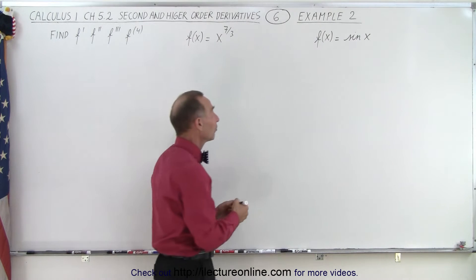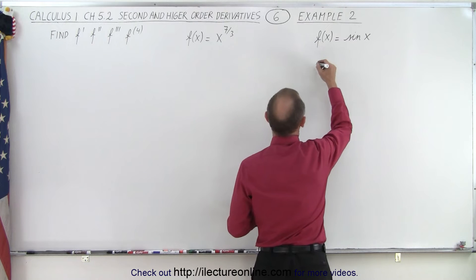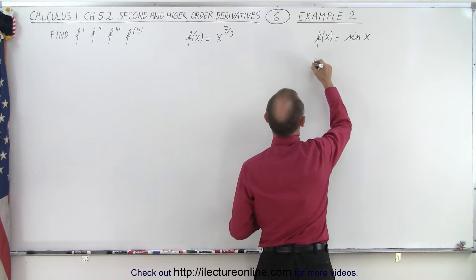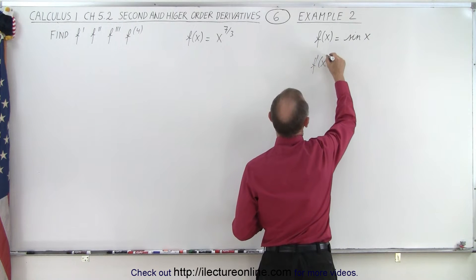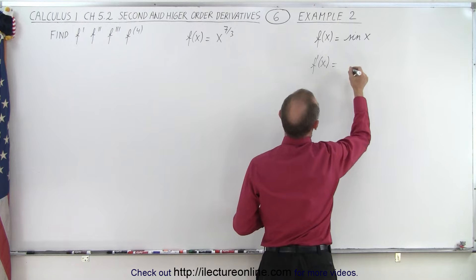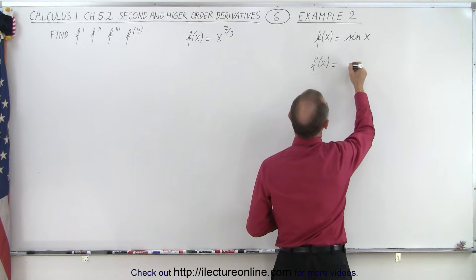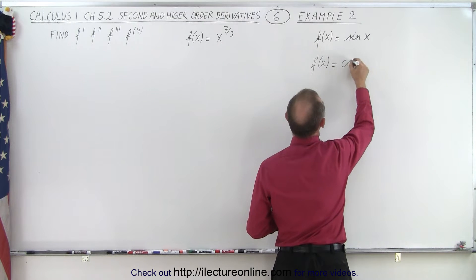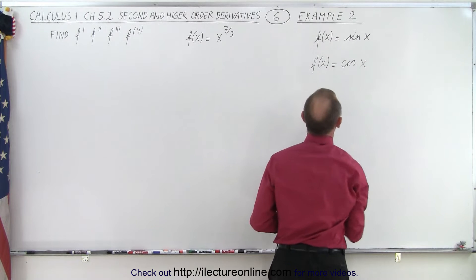If we take the first derivative of sine of x, f prime of x, that is equal to the cosine of x.